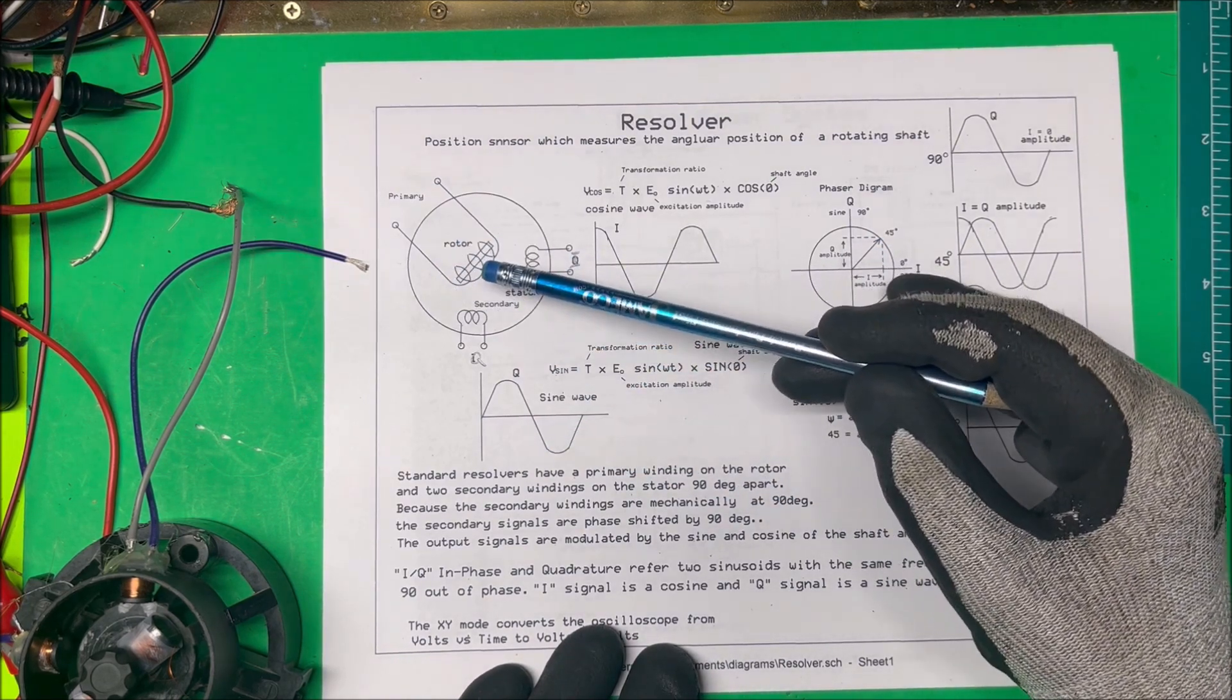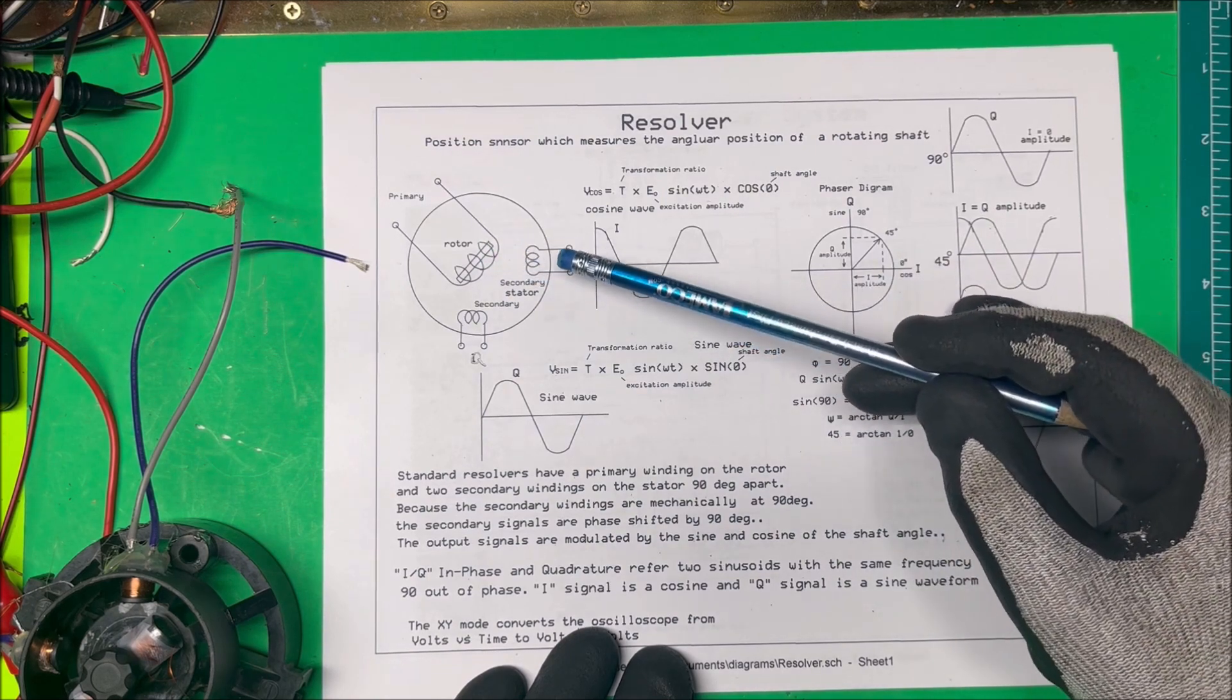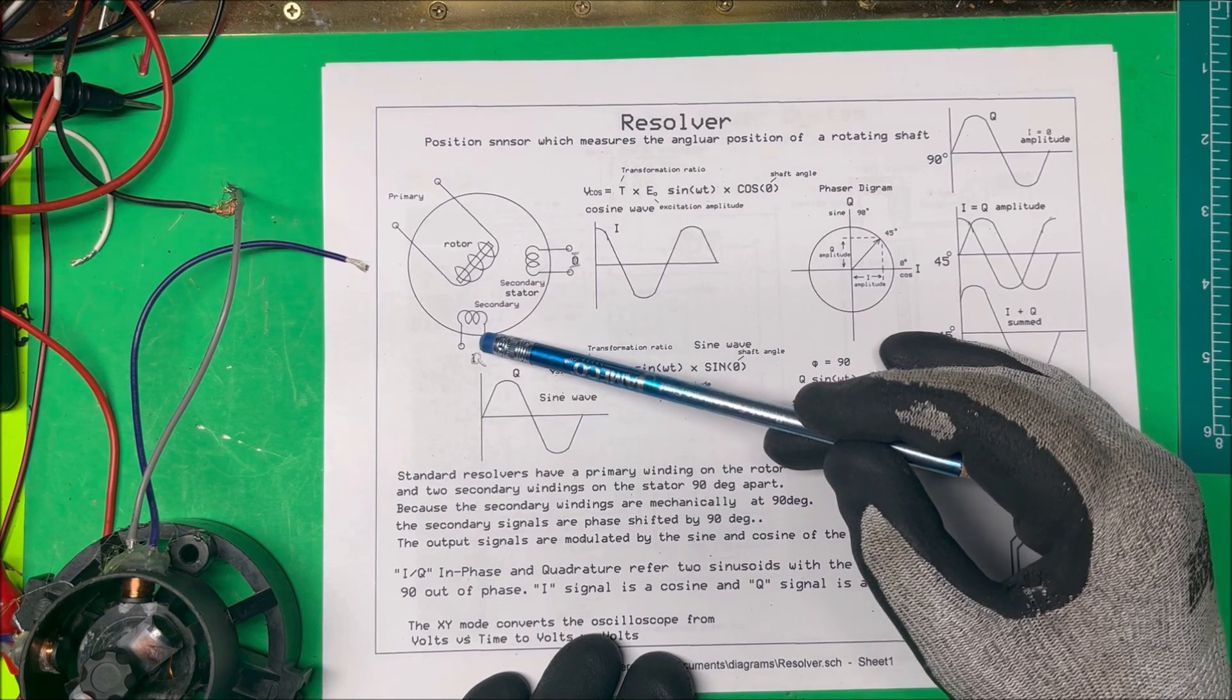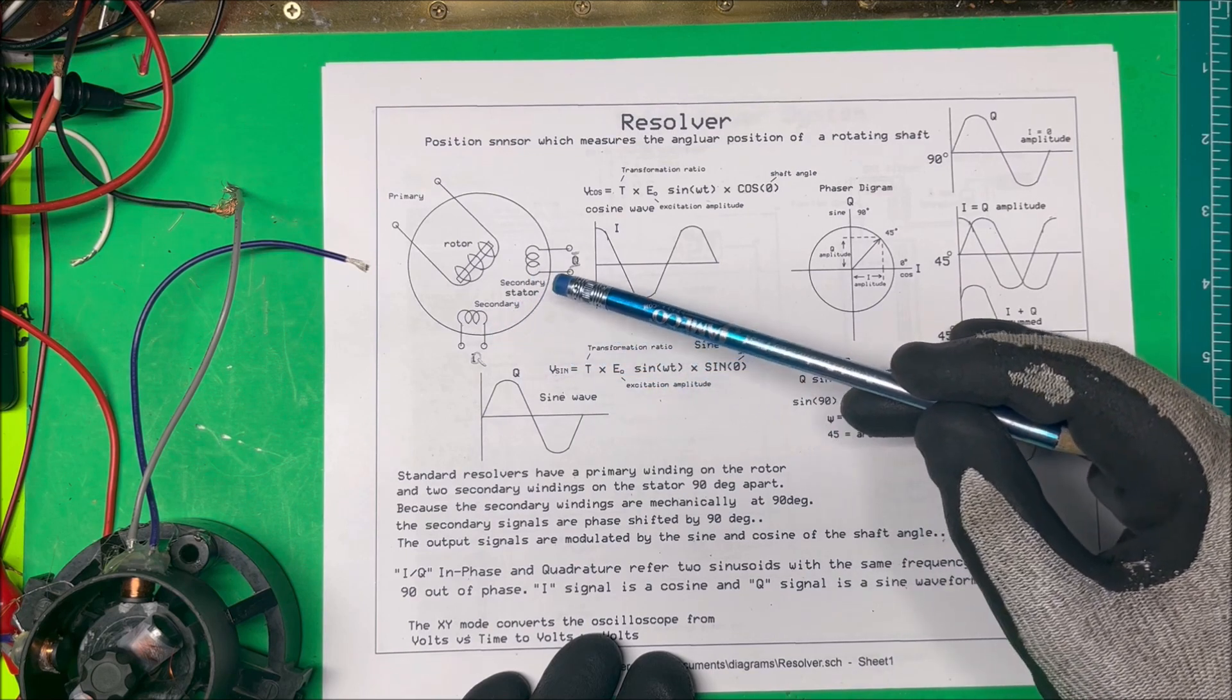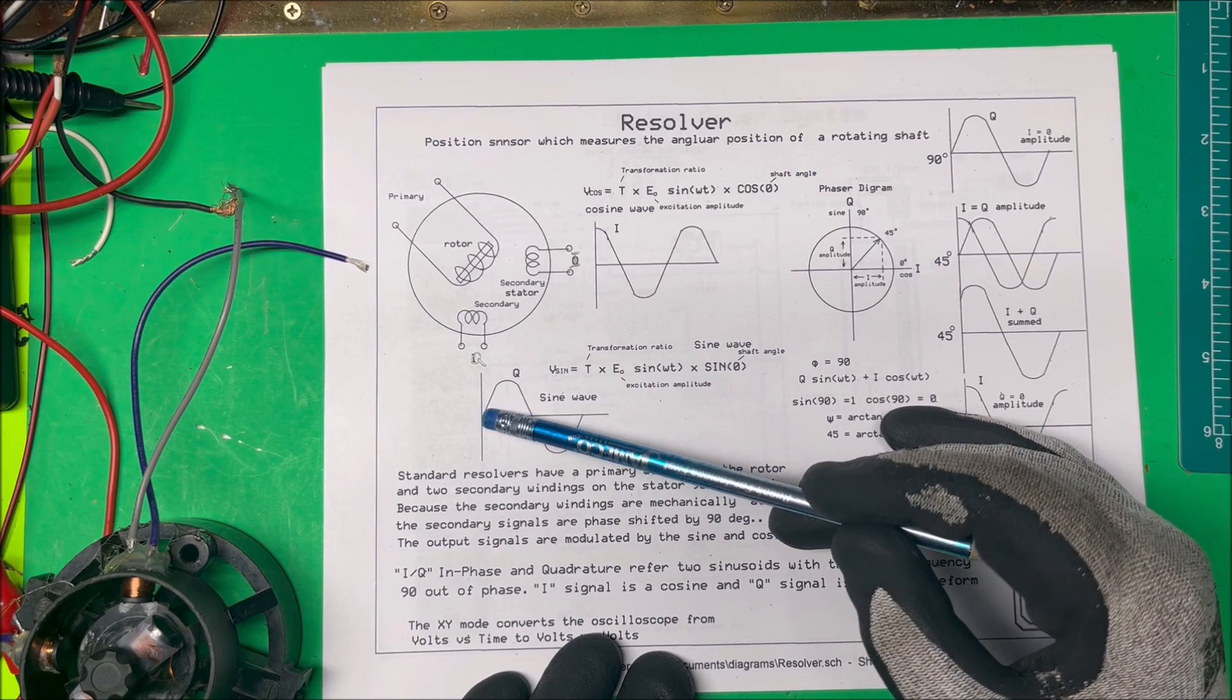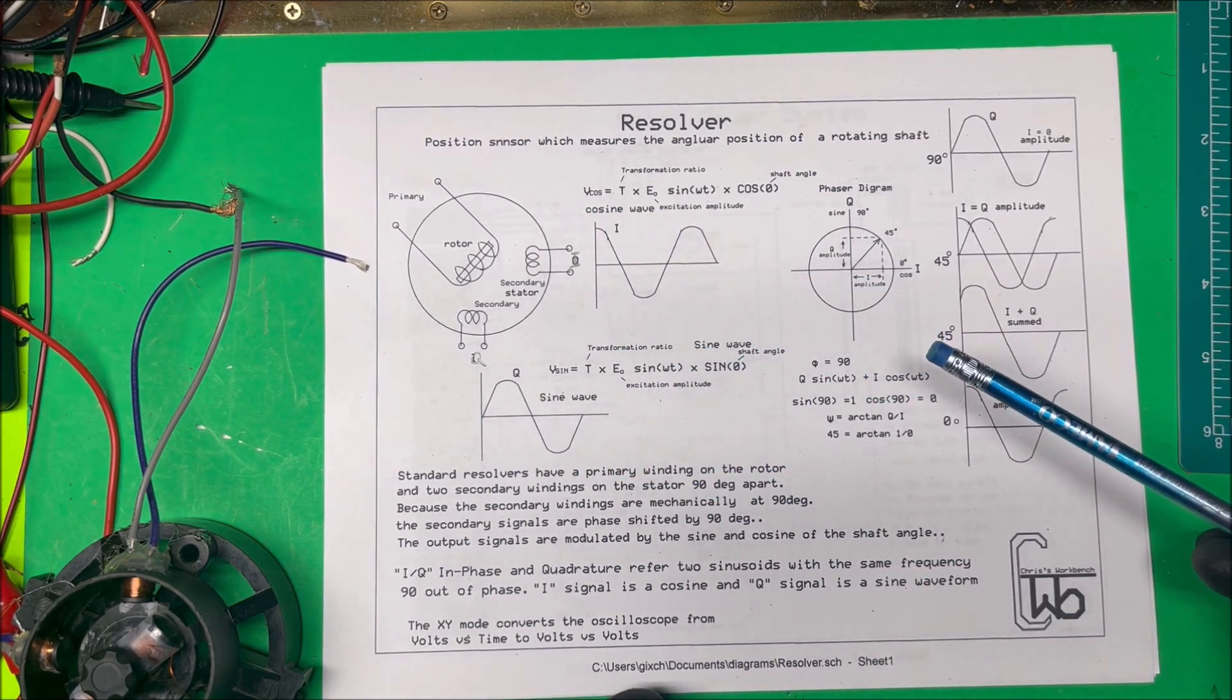The standard Resolver has a primary winding on the rotor, here it is here, and it has two stationary windings that are 90 degrees apart. Because the stationary windings are mechanically 90 degrees apart, the secondary signals are phase shifted by 90 degrees. So here we have a sine wave that starts at zero and we have a cosine here starts at 90. So these two are 90 degrees apart.